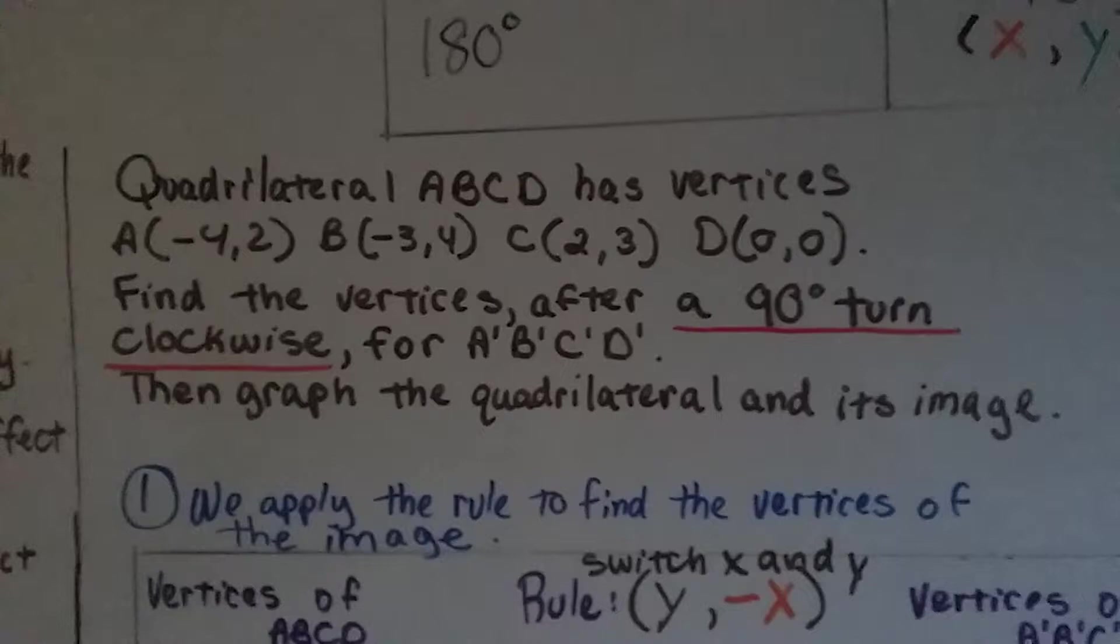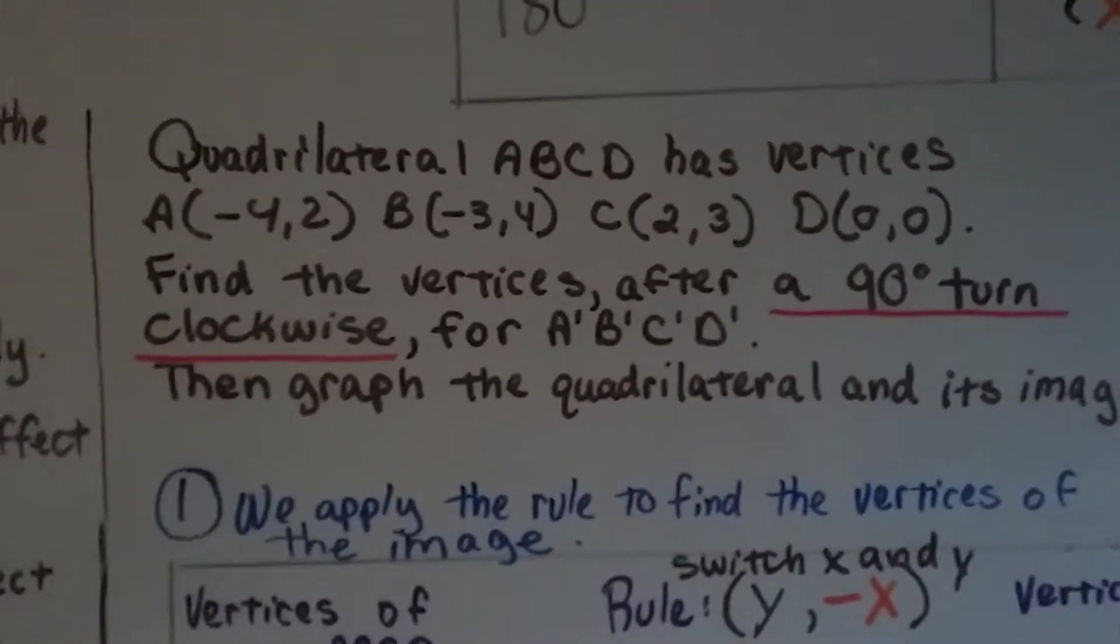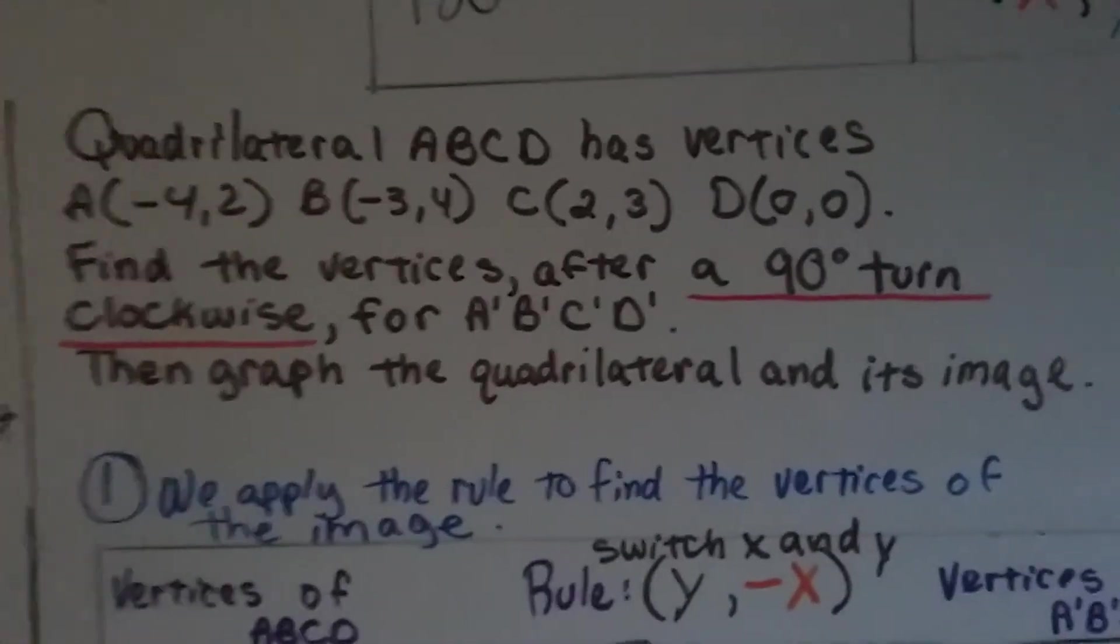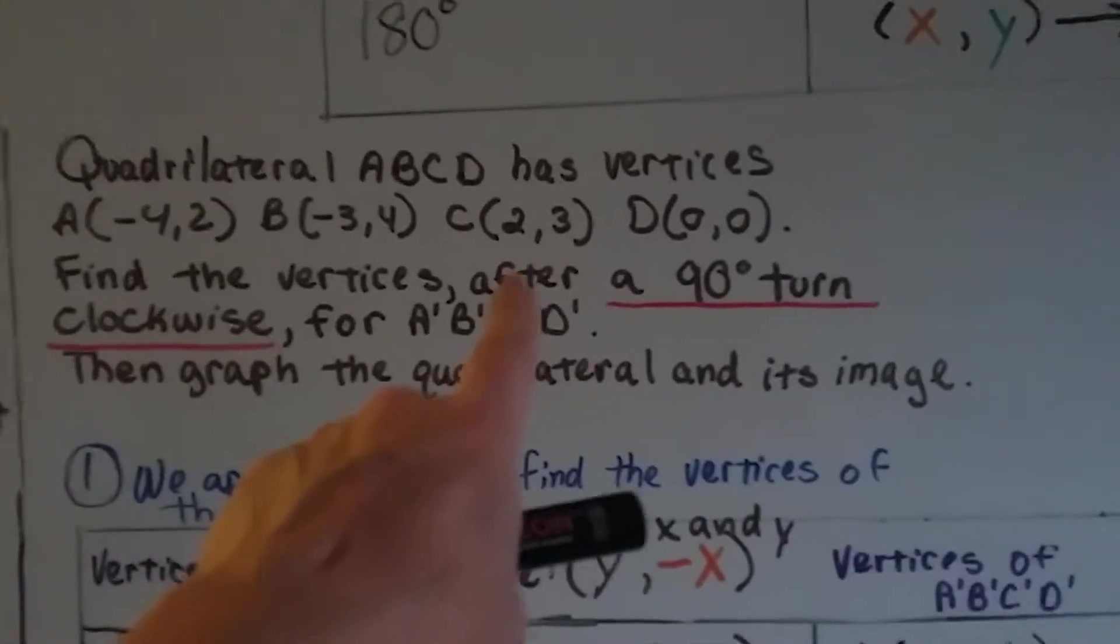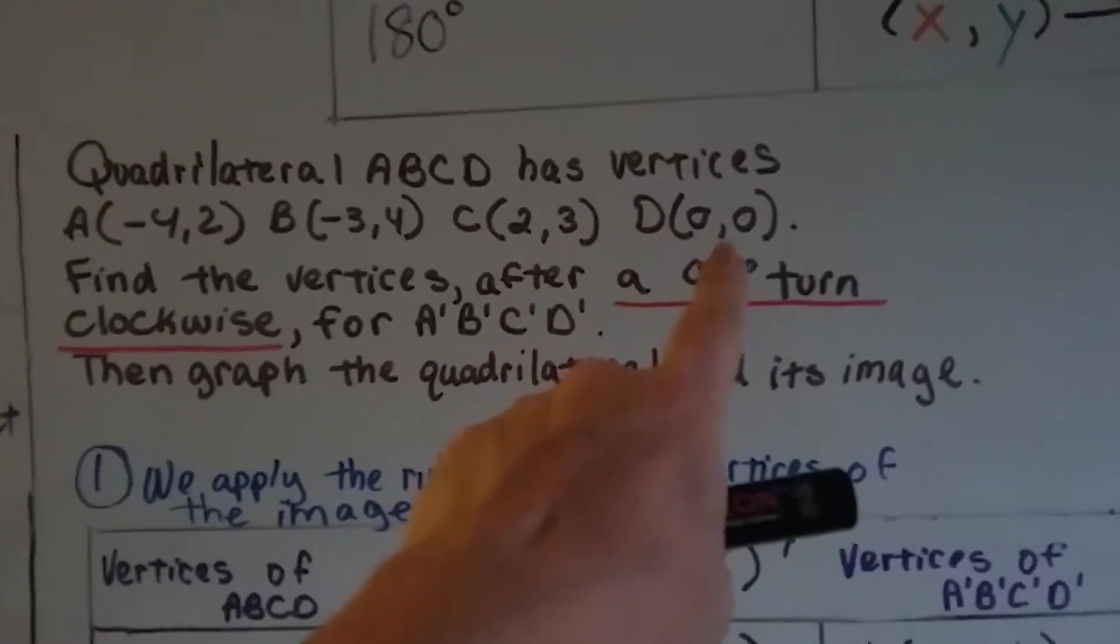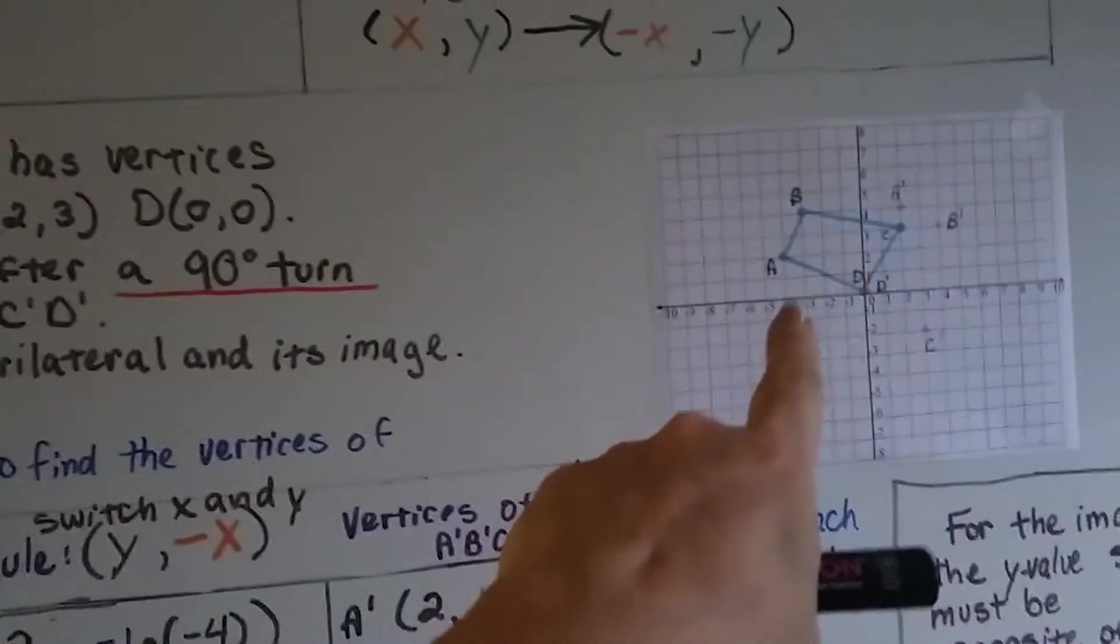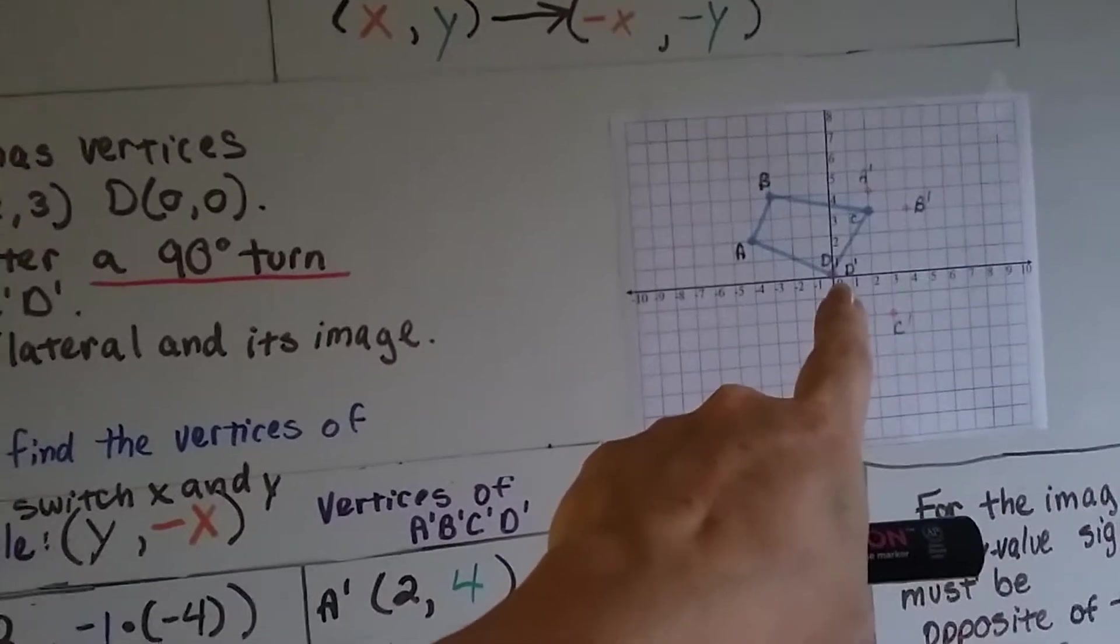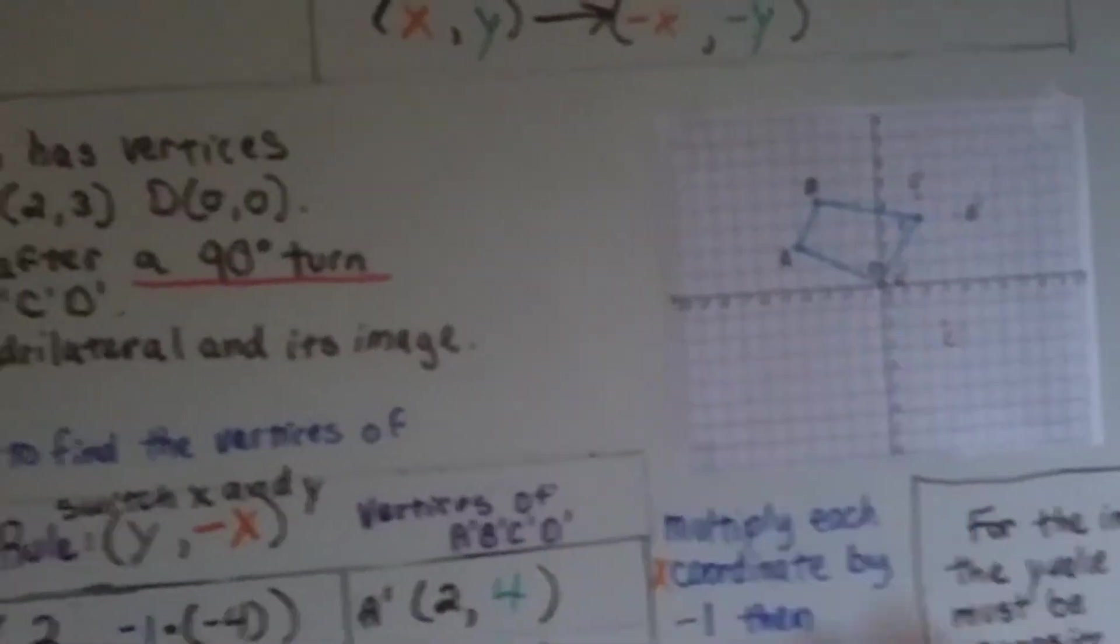So quadrilateral A, B, C, D has vertices of A is negative 4, 2. B is negative 3, 4. C is 2, 3. And D is 0, 0 on the origin. It's right here, D is on the 0, 0 on the origin. It's our quadrilateral.